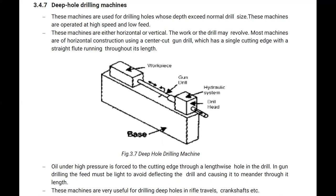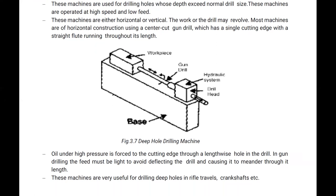In gun drilling, the feed must be light to avoid deflection and causing the drill to wander through its length. These machines are very useful for drilling deep holes in rifle barrels or crankshafts — the rifle has a very long hollow shaft and we can use this machine for drilling it, as well as for crankshafts.